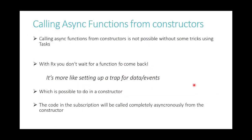One nice thing is that calling an async function from a constructor is a common problem. With Rx, that's no longer an issue because Rx doesn't wait for anything — it starts the call and handles the result as soon as the data is back. It's really like setting up a trap for the event rather than waiting. The subscription and processing of the pipeline will be completely asynchronous from the constructor call.